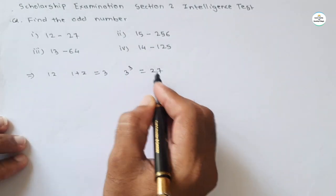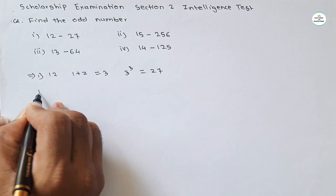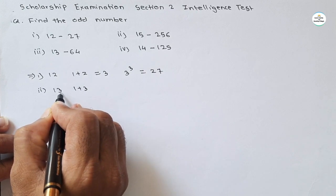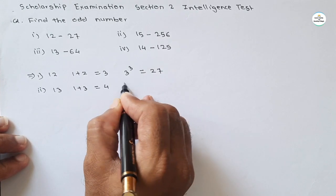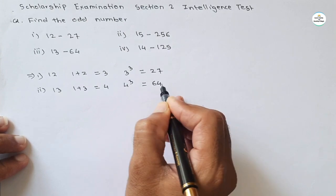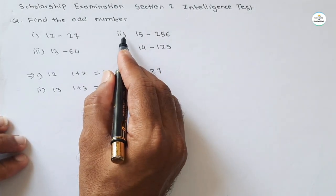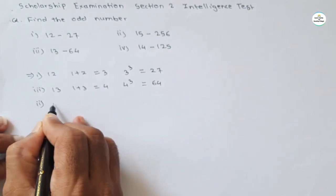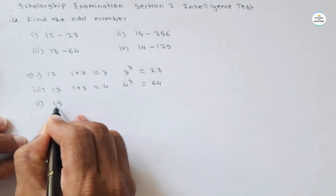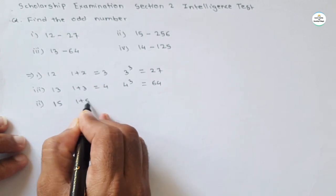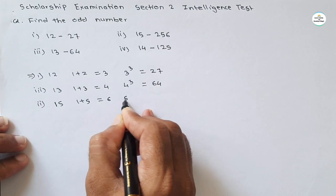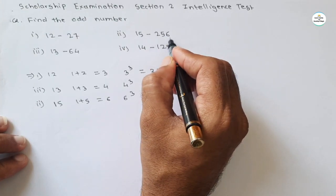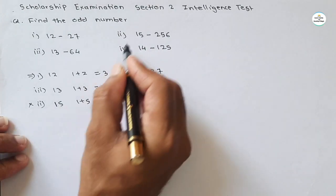Let's try this relation for the remaining numbers. For the third group, 13: 1 plus 3 equals 4, and 4 cubed is 64 — the same relation holds again. Now for the second group, 15: 1 plus 5 equals 6, and the cube of 6 is 216 — but the number given is 256, so this relation is not applicable to the second group.